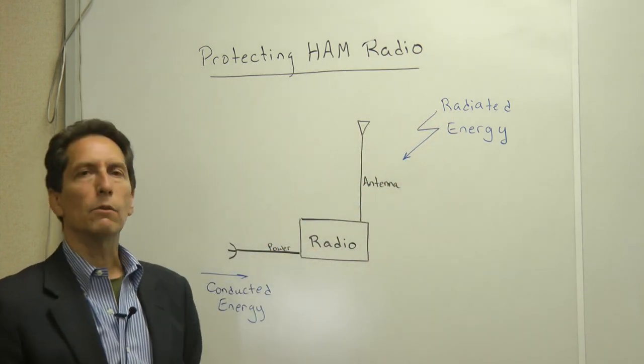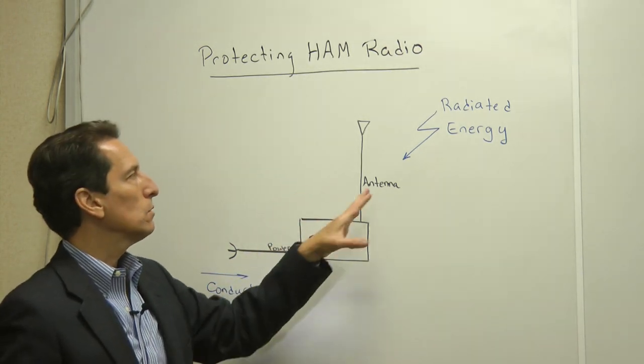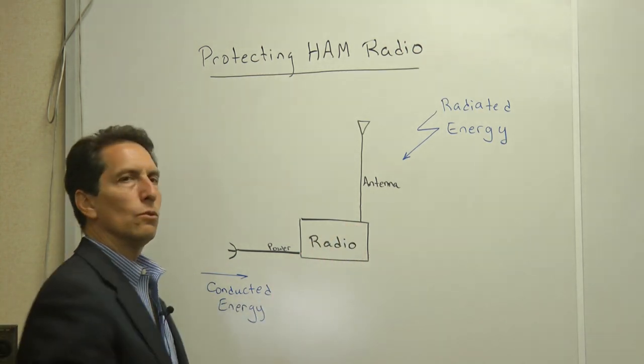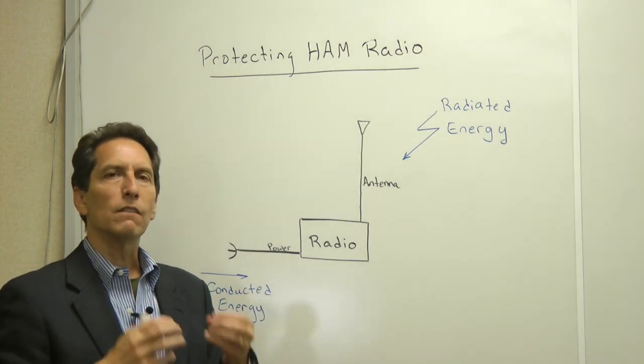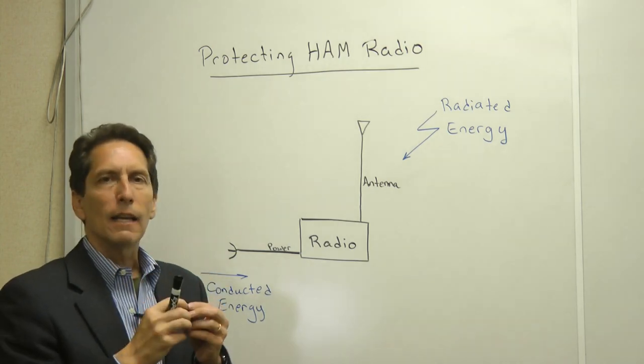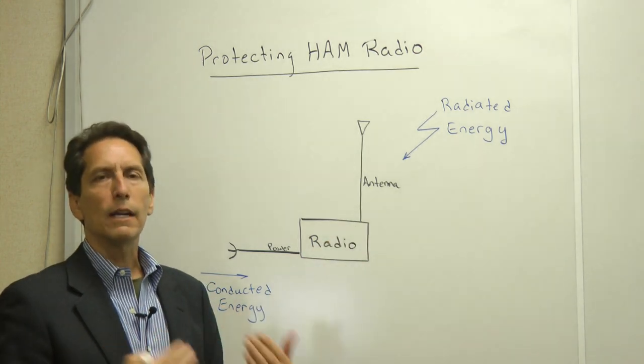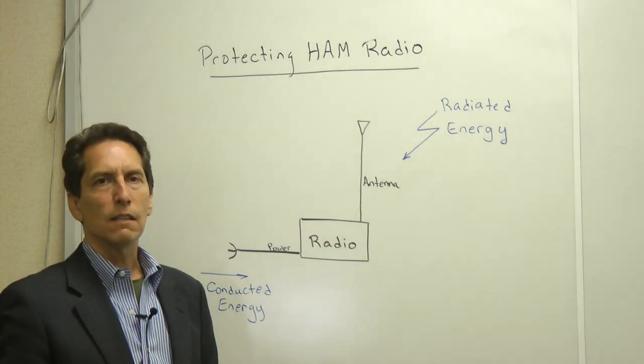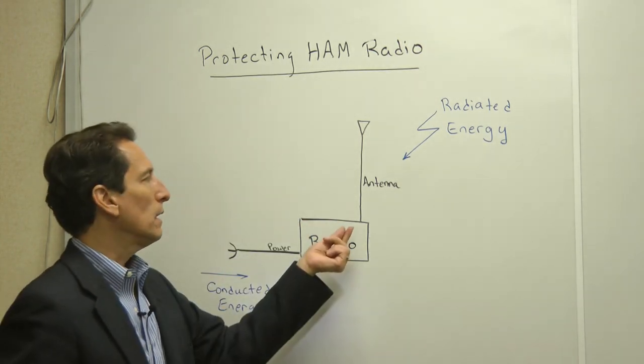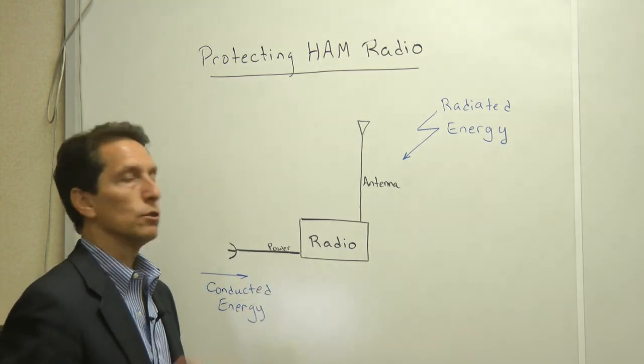So this radiated energy couples in, and certainly it would couple well into the antenna wire and the antenna that's attached to it. Now it could also couple into the radio itself, and it could couple into the power cord at the front end. But one of the primary concerns is the energy that couples into the antenna. And the reason that's such a concern is it's connected to the portion of the radio that's very sensitive.